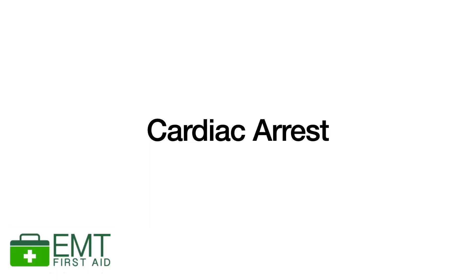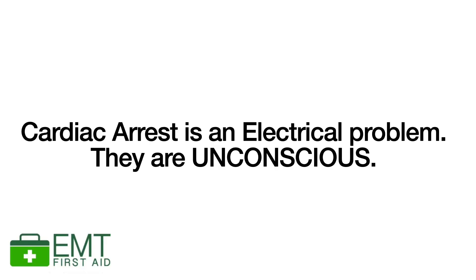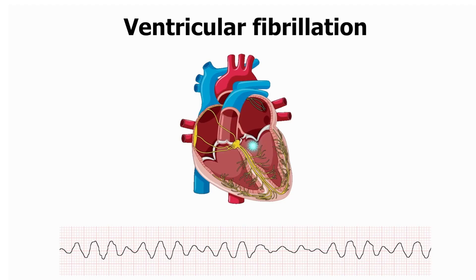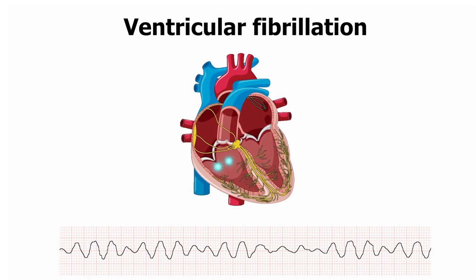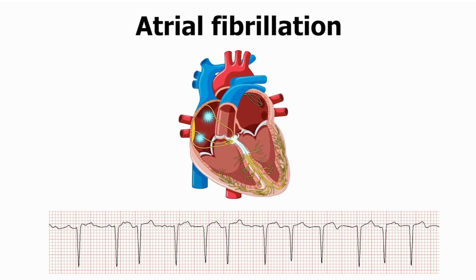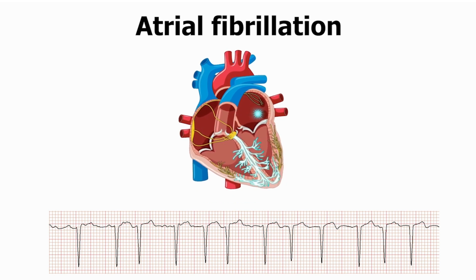Let's take cardiac arrest first. Cardiac arrest occurs when a heart malfunctions and it stops beating, and therefore it stops pumping blood and oxygen around the body. It's normally triggered by an electrical malfunction that causes an irregular heartbeat, maybe AF or VF. With its pumping action disrupted, the heart cannot pump blood to the brain, the lungs and other organs, and therefore the person is going to stop breathing normally.